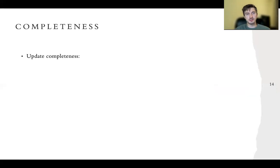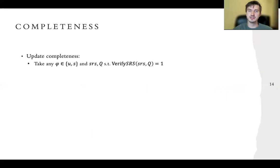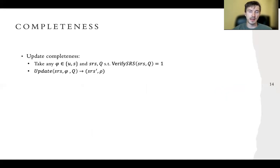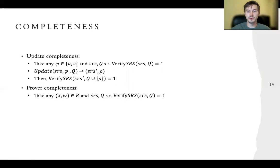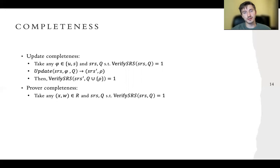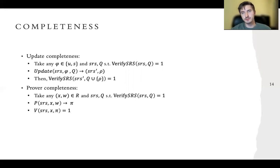From the security side, we want completeness in two flavors. We want updated completeness, which says that if you have some SRS which verifies and we make an update, then the updated SRS will also verify. And we also have proof completeness, which is essentially the usual notion of completeness in non-interactive zero-knowledge protocols: if the SRS verifies and the honest prover generates a proof, then the verifier will accept the proof. These are just properties to guarantee that our protocol makes sense.